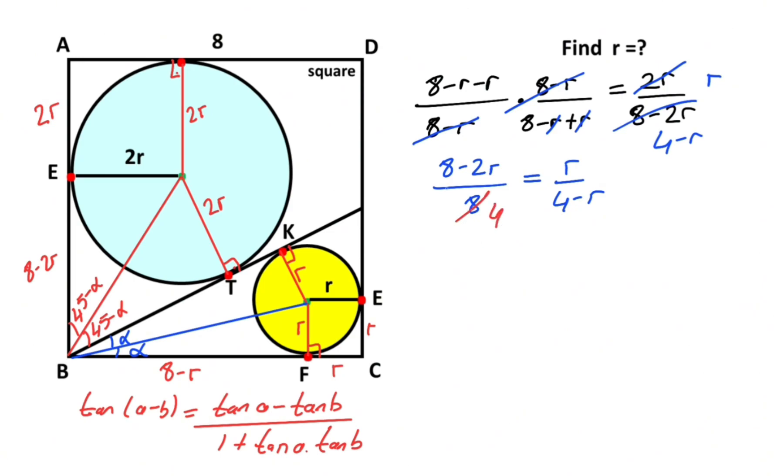Therefore, 4 minus r whole squared equals 4r, right? So 16 minus 8r plus r squared equals 4r. Therefore, if you organize the equation, we get r squared minus 12r plus 16 equals zero. So we get a quadratic equation.